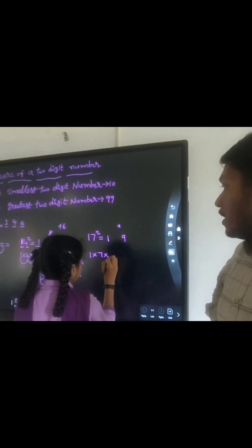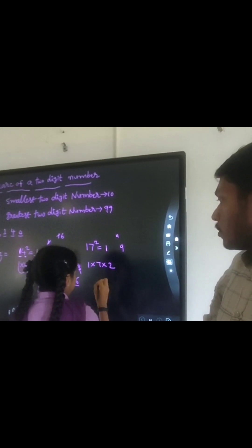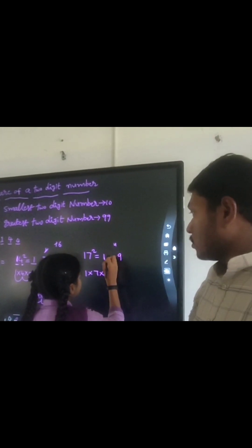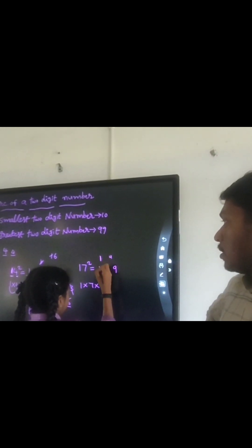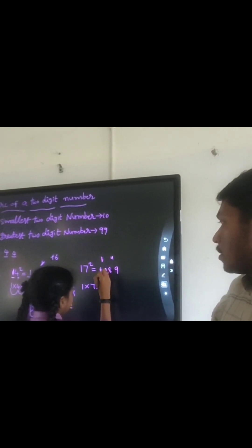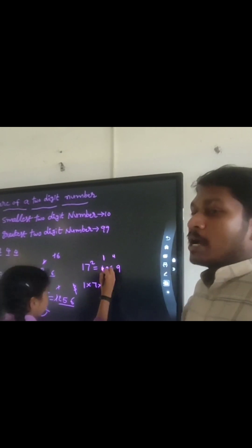1 into 7 into 2 is 14, plus 4 equals 18. Super. 1 is carried forward. So 1 plus 1 is 2. So 289 is the answer.